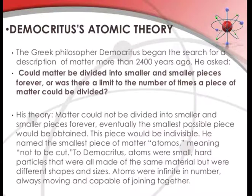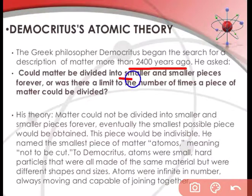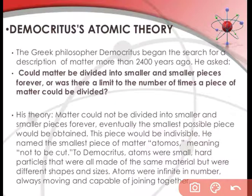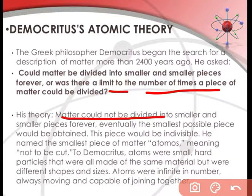First theory is Democritus's atomic theory. The Greek philosopher Democritus began the search for a description of matter more than 2400 years ago. He asked: Could matter be divided into smaller and smaller pieces forever, or was there a limit to the number of times a piece of matter could be divided? His theory: Matter could not be divided into smaller and smaller pieces forever. Eventually, the smallest possible piece would be obtained.